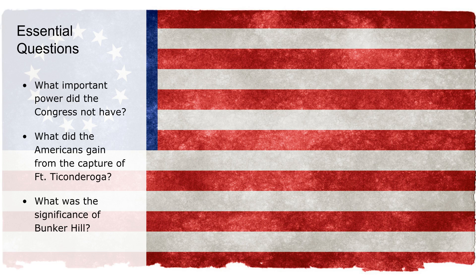A few things to make sure you're listening for and paying attention to: What important power did Congress — the Second Continental Congress — not have during the American Revolution? What did the Americans gain from the capture of Fort Ticonderoga, which is a British fort? And finally, what is the significance of Bunker Hill? Make sure you're paying attention to those things especially closely during these notes.